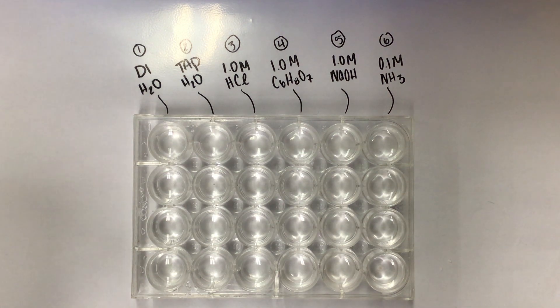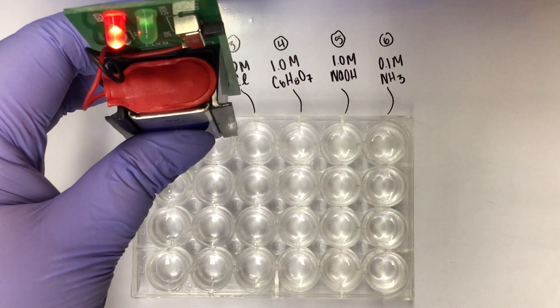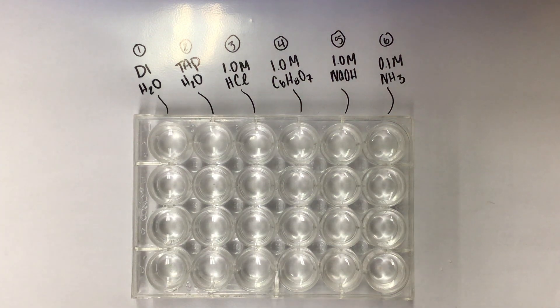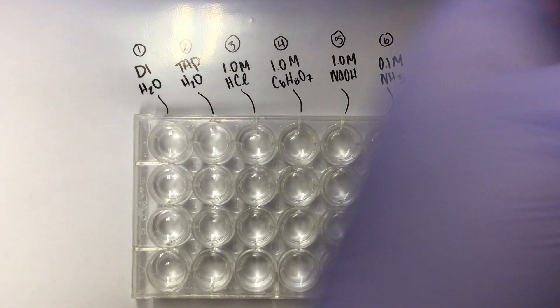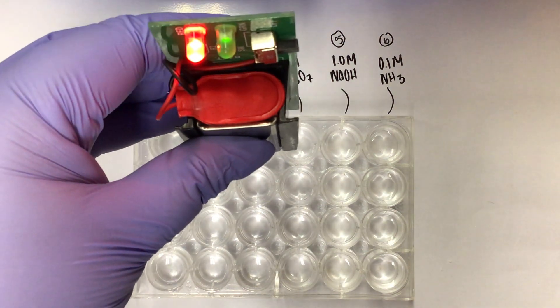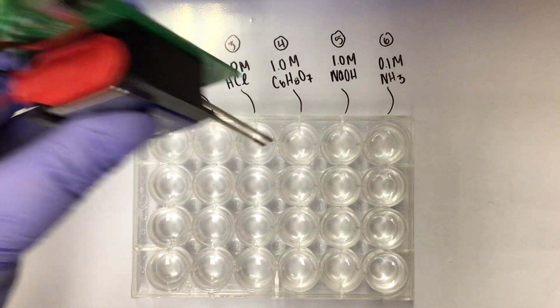Next I'm going to do the tap water. Both of our light bulbs light up, so highly conductive. I'm going to rinse now with water before I do the next one. The next one is 1 molar HCl. Both lights light up very bright, highly conductive.